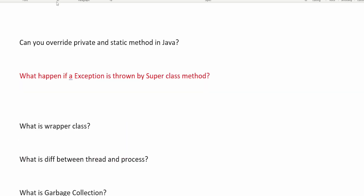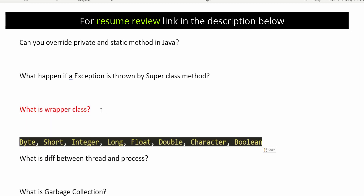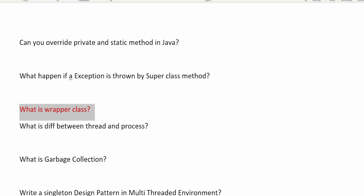The next question is: what is a wrapper class? Wrapper classes are a simple topic in Java. Examples include Integer, Float, Character, and Boolean. These are called wrapper classes because they wrap primitive data types into objects. For example, for the primitive int you have the Integer class, and for long you have the Long class. So wrapper classes allow primitive types to be used as objects.